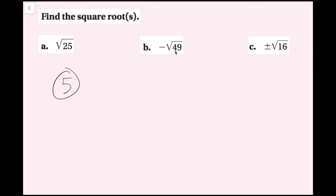For part b, I have the negative square root of 49. I just want the negative square root of 49. I know that 7 times 7 is 49, so I take that 7 and make it negative. So I have negative 7. This is asking for the negative square root, and negative 7 is the negative square root of 49.